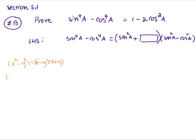In this case, if we have x to the fourth, that means we have (x²)² minus (y²)². So we can write it as (x² minus y²)(x² plus y²), as used in the first step. That means the missing part here is cos²A.